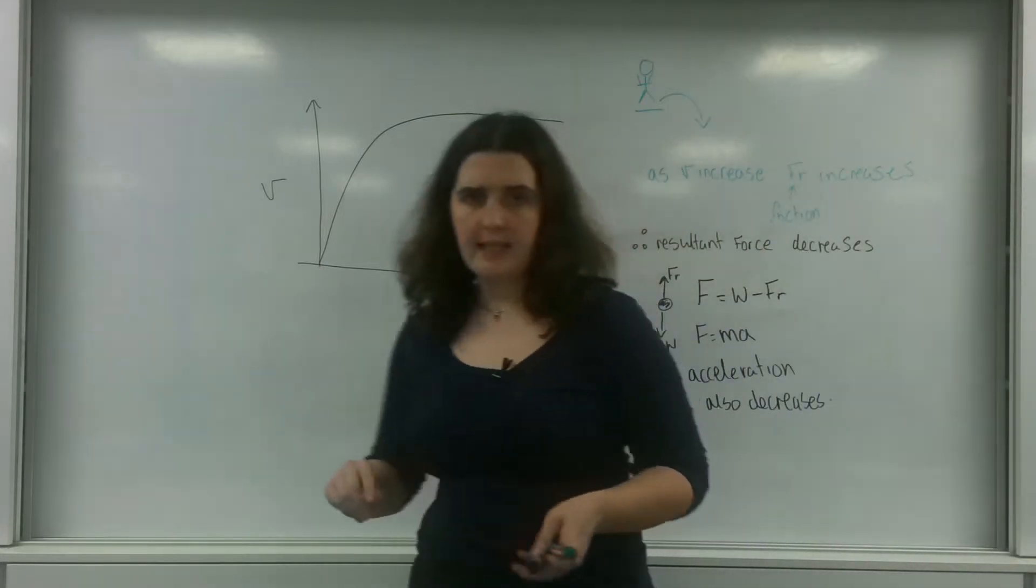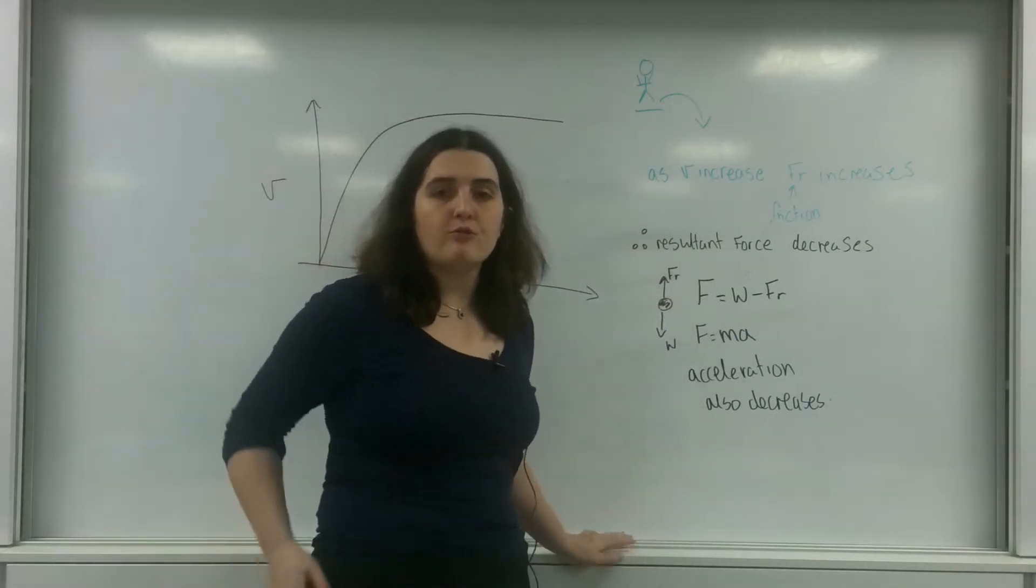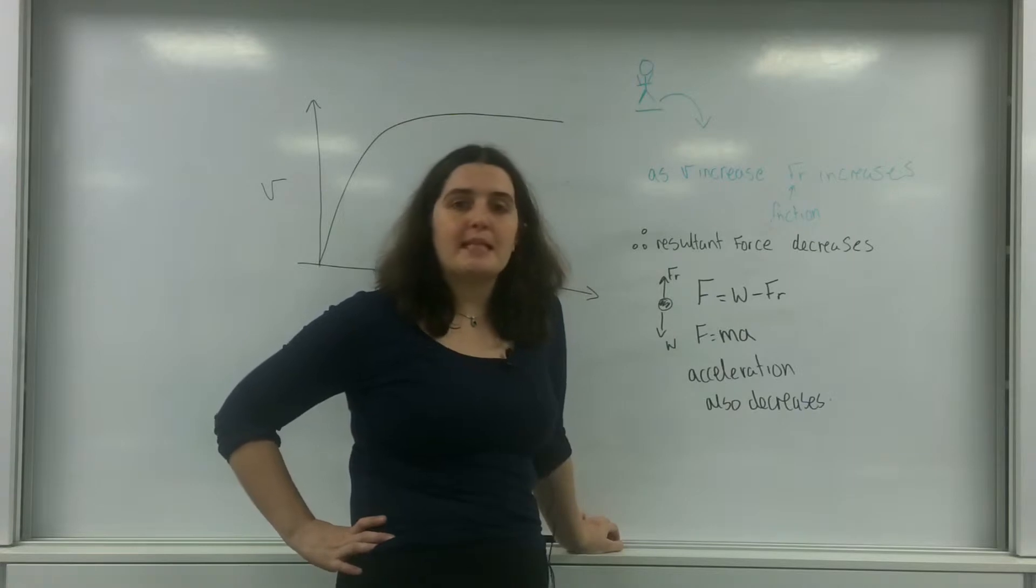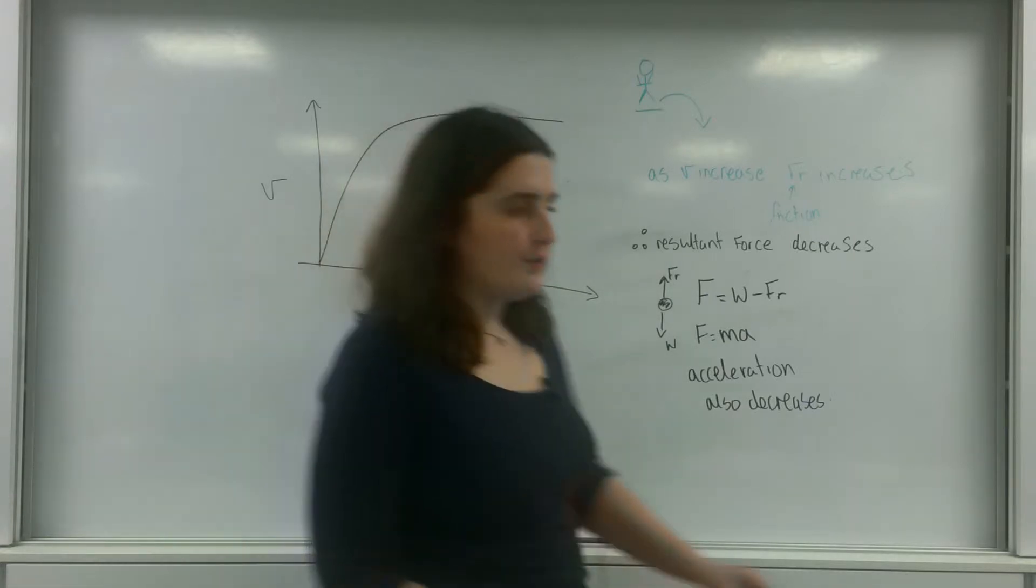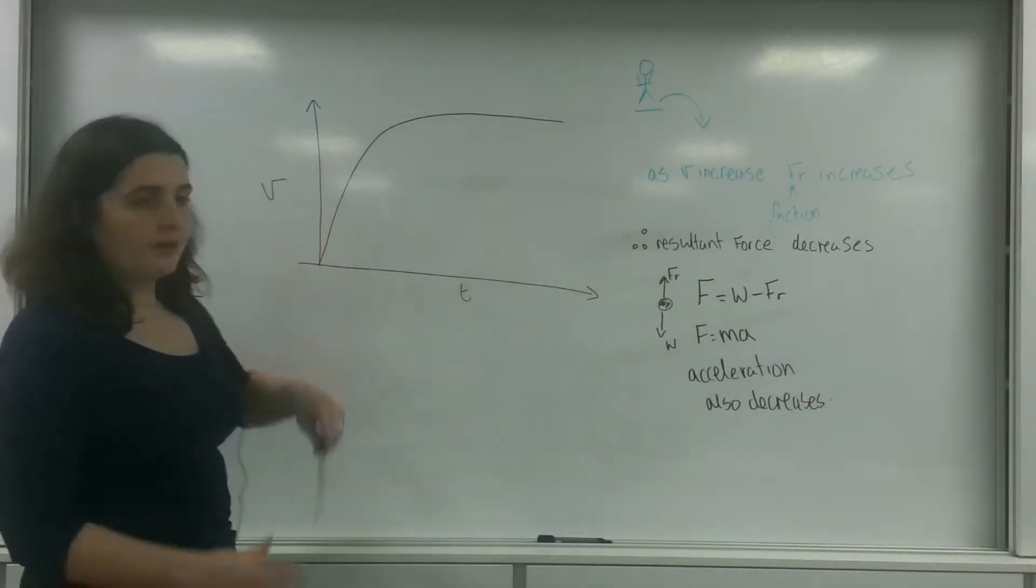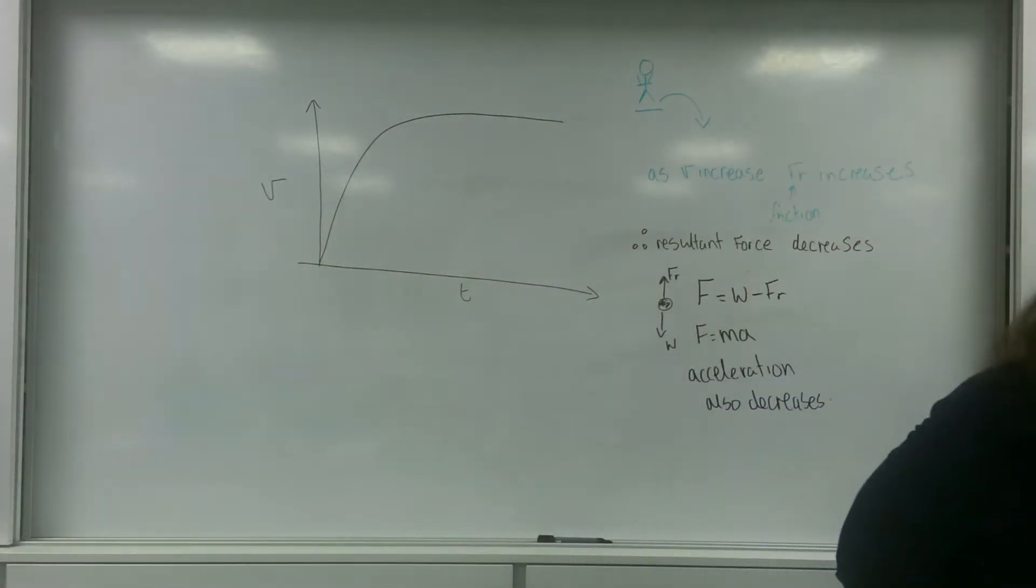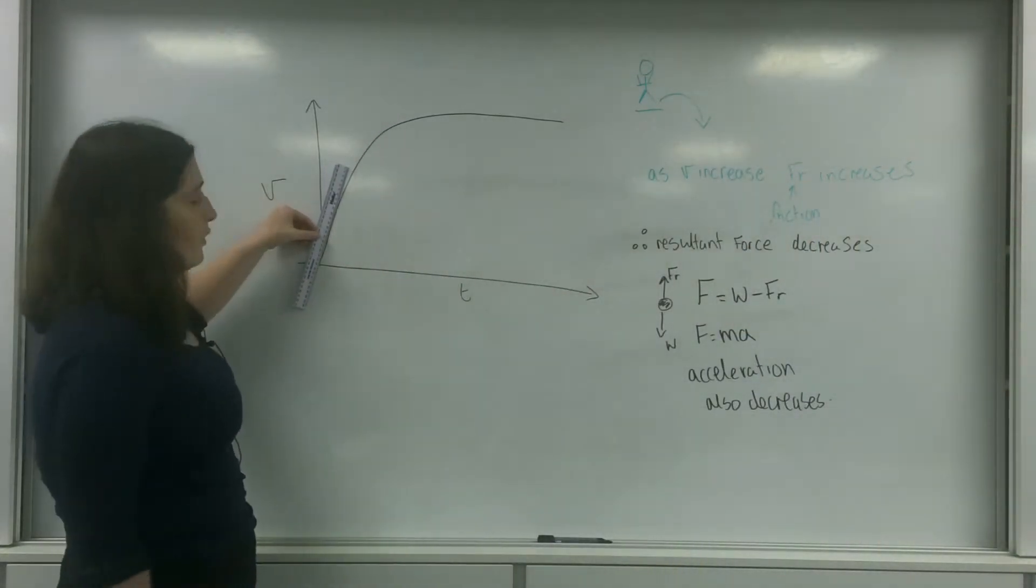Now, this here is a velocity time graph. And in previous videos, I have mentioned about the gradient of this graph representing acceleration. And if we look at the gradient of this graph, if I just grab a ruler here, the gradient of the graph, I'll grab a white one instead so you can see it. So at the start, I have a nice, quite constant gradient.